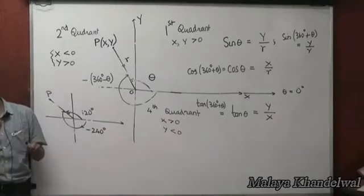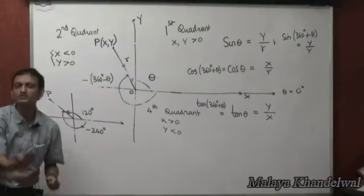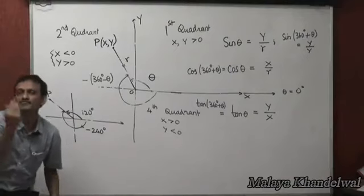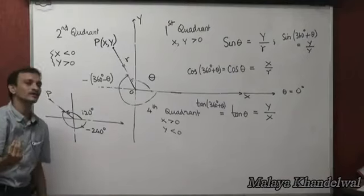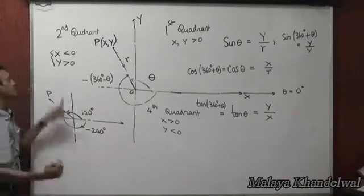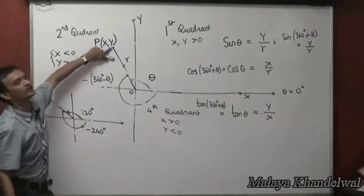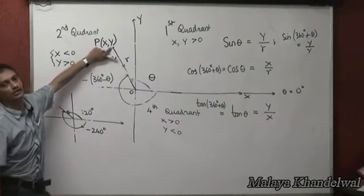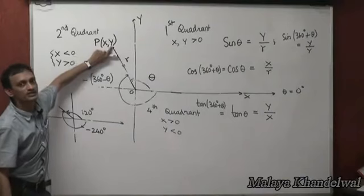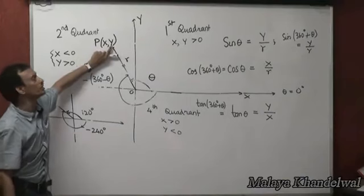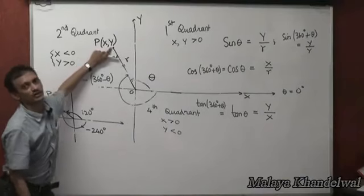It does not matter. You will have the same value of the trigonometric ratio as long as you are able to arrive at the same final position of the rotating line and therefore the same pair of coordinates of the tip.